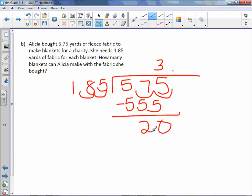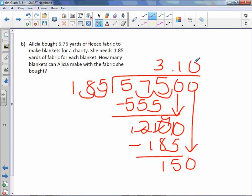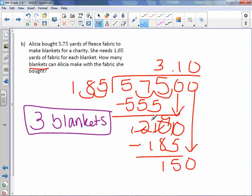Bring down the 0. It can go in once. Minus 185 is 15. Bring down the 0. Now this is going to continue on. However, we already know the answer to our question. It says how many blankets can she make? Blankets are a whole number. So if this goes in 3.1 times, that tells me she can only make 3 blankets. You need to round to a whole number, round down to a whole number in this case.